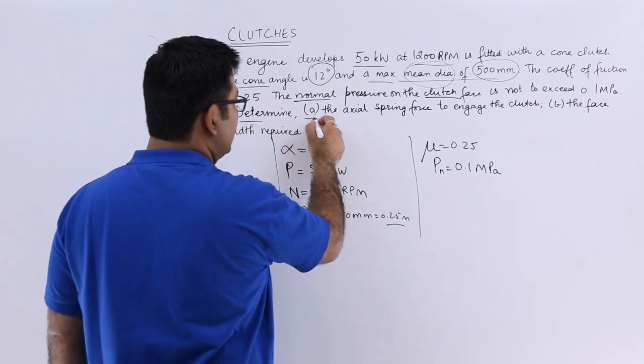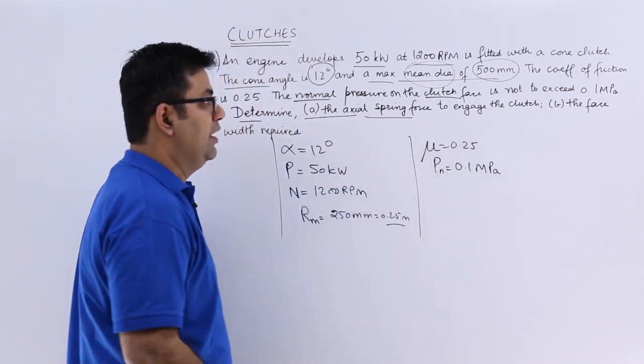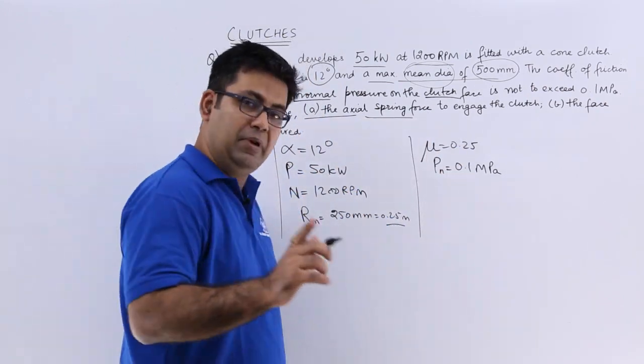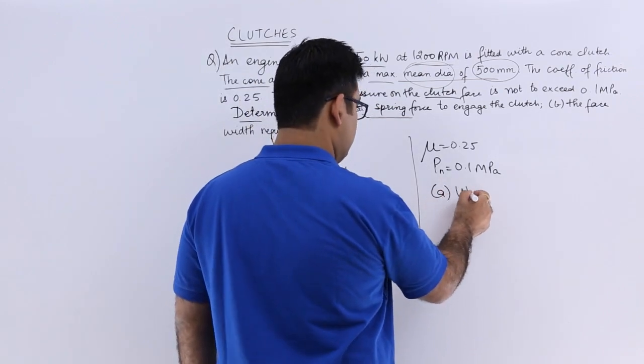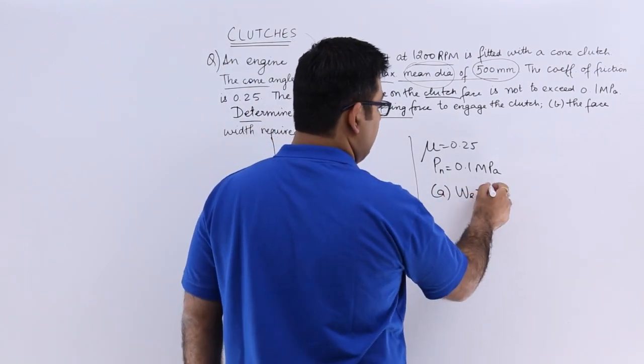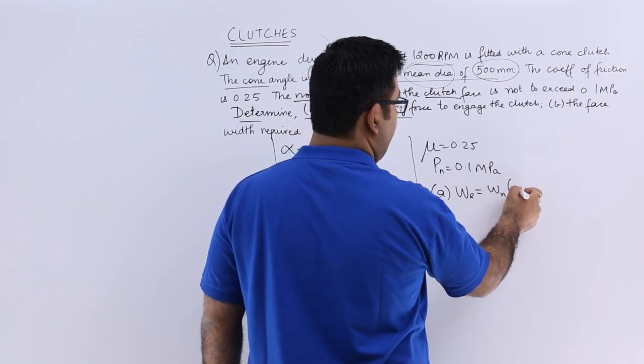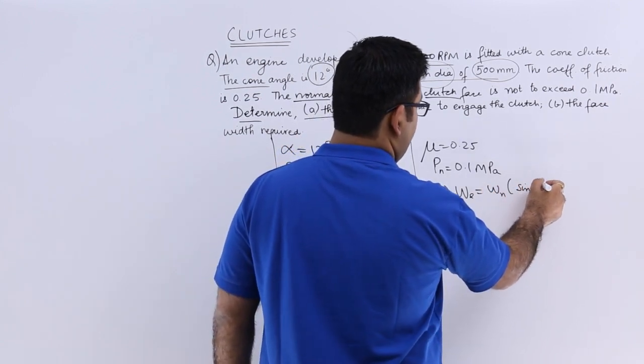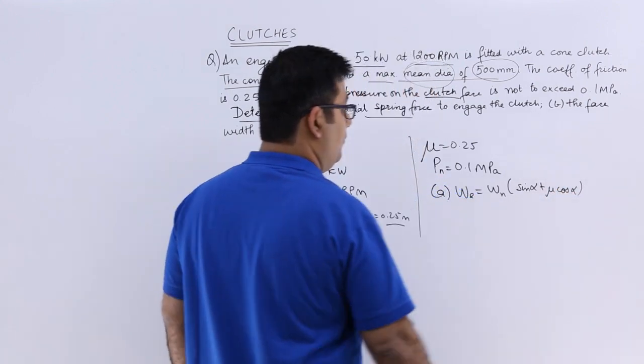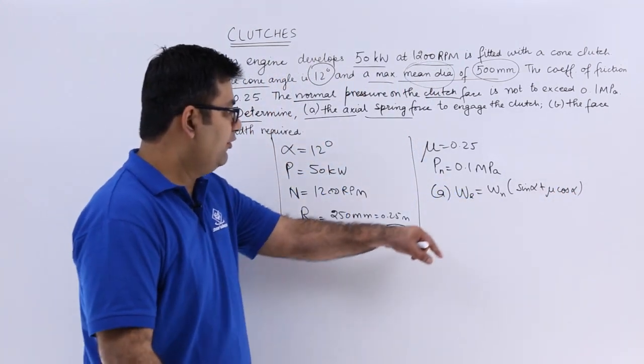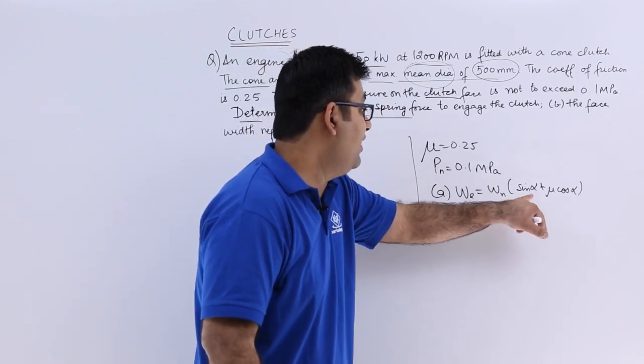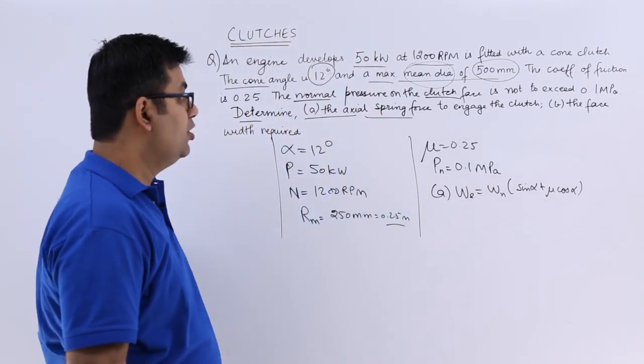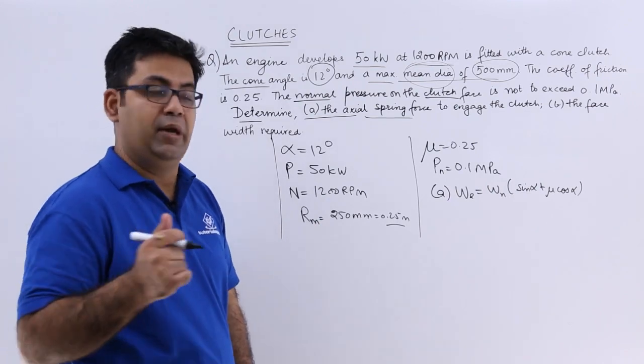Determine the axial spring force to engage the clutch. The formula for this is WE equals WN times sin alpha plus mu cos alpha. So this is what we need to find out. So we need to have WN first because we already have alpha and mu.